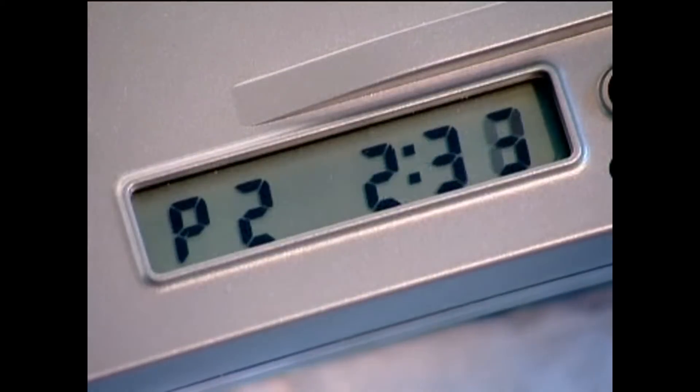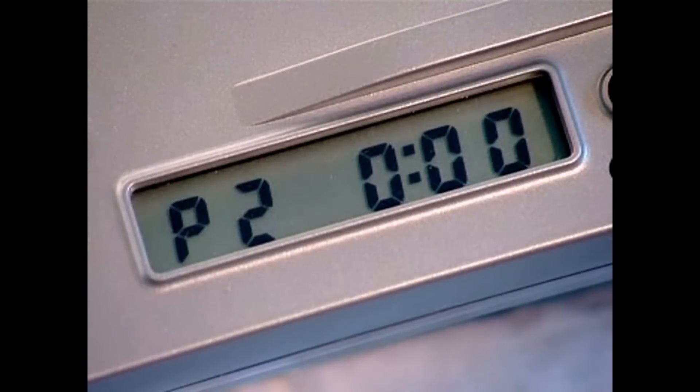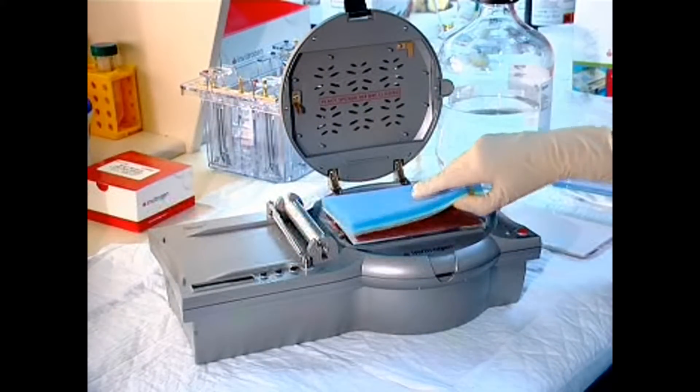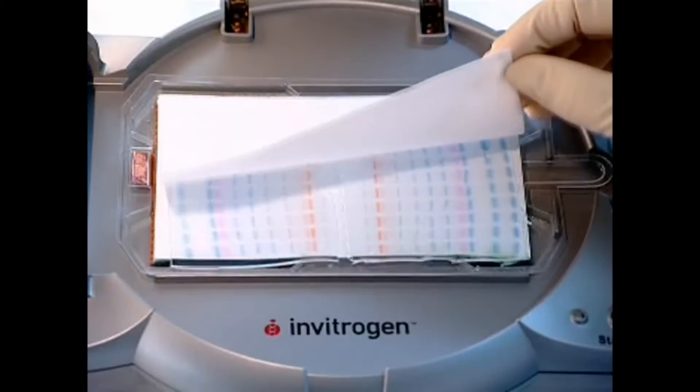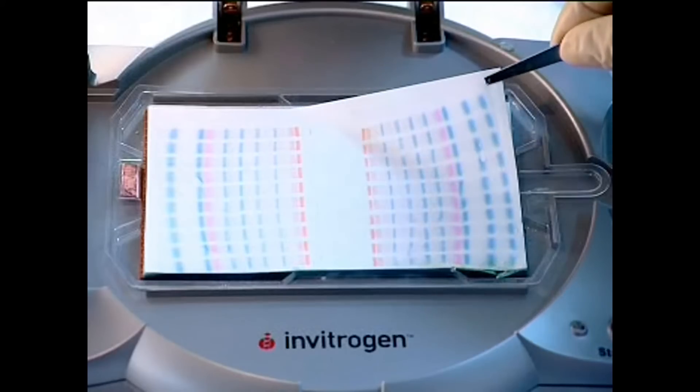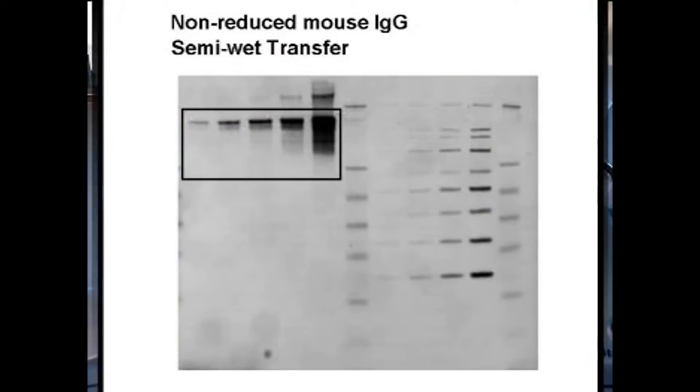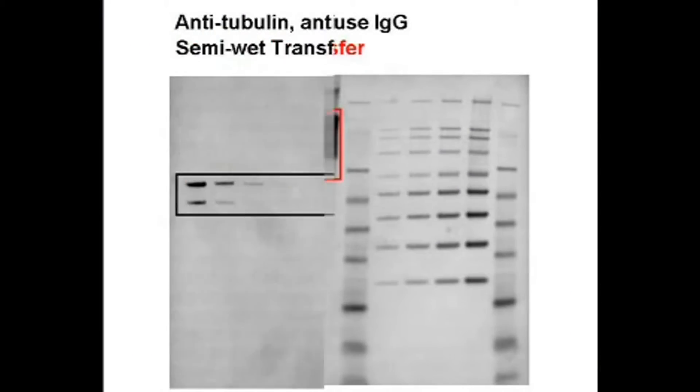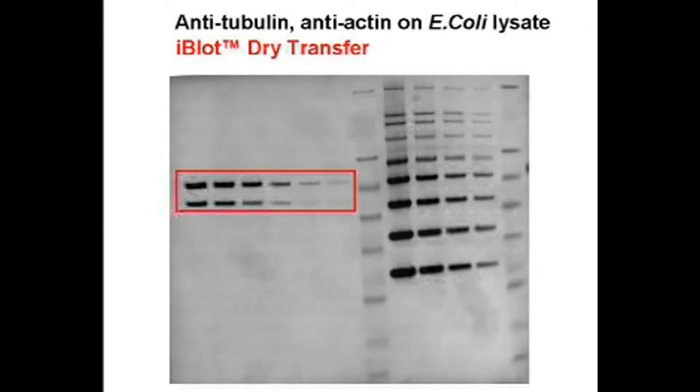Fast transfers are possible since the iBlot internal power supply enables currents exceeding 3 amperes. Transfer is sharp and even. The unique attributes of dry blotting result in detection sensitivity that frequently exceeds that of traditional methods.